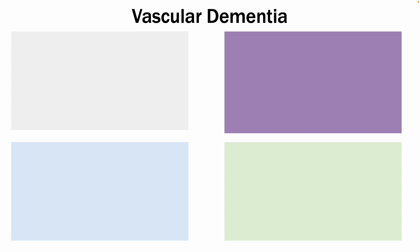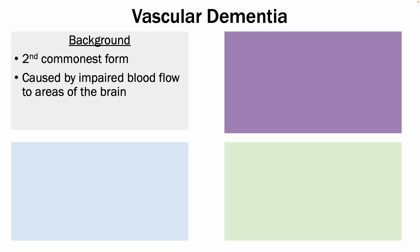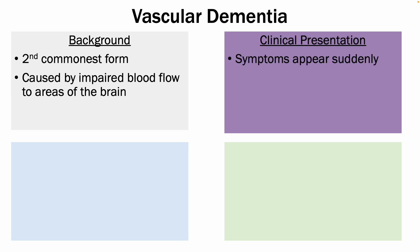Next, there's vascular dementia, which is the second commonest form, and it is caused by impaired blood flow to areas of the brain, as the name would suggest. In terms of the clinical presentation, the symptoms tend to appear suddenly; however, there is stability in between each vascular event, and the symptoms depend on what area of the brain is affected.